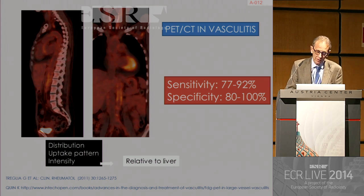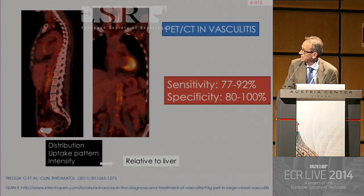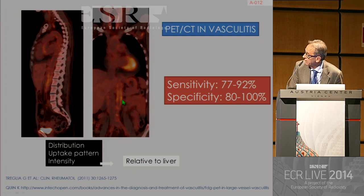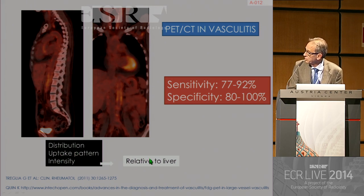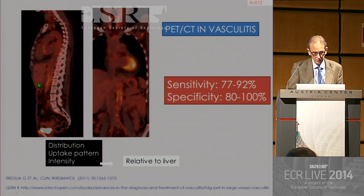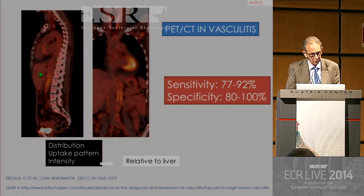The sensitivity of PET-CT is around 77 to 92 percent, and the specificity is between 80 and 100 percent. What we look for is uptake in the wall of the vessel. Nuclear medicine colleagues usually look at the distribution, the uptake pattern, and the intensity. A good approach is to use a semi-quantitative method and look at the intensity of uptake relative to the liver, because sometimes we may confuse vasculitis uptake with atherosclerosis, which may also show some increase in uptake.